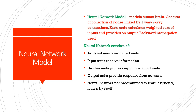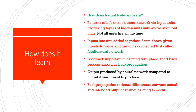A neural network is not programmed to learn explicitly — it will learn by itself. Patterns of information enter the network via input units, triggering layers of hidden units, and then the output units trigger. Not all units will fire at the same time. Inputs into a unit are added together, and if the sum is above a given threshold value, this will fire the units connected to it — this is called feed-forward networking. Feedback is also important in a neural network when learning takes place, and this feedback process is known as backpropagation. The output produced will be compared to the intended output, and backpropagation reduces the differences between the actual and intended output, causing learning to occur.